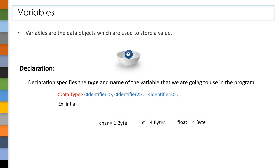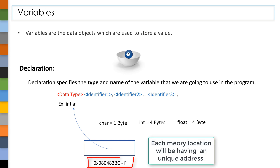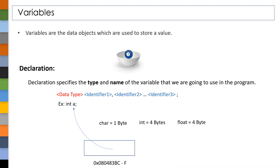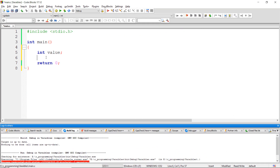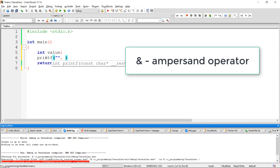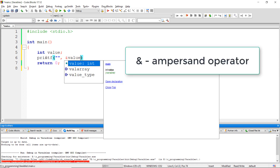Since I have used the int data type, when the program is in execution, 4 bytes of memory will be allocated to this variable. As we know, each memory location will have a unique address, so this variable is also having an address. In order to get the address of this variable, we have to use an ampersand operator.